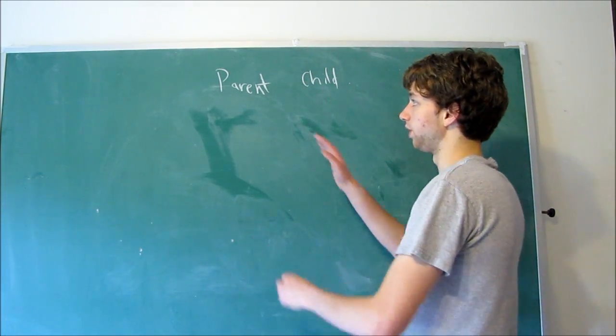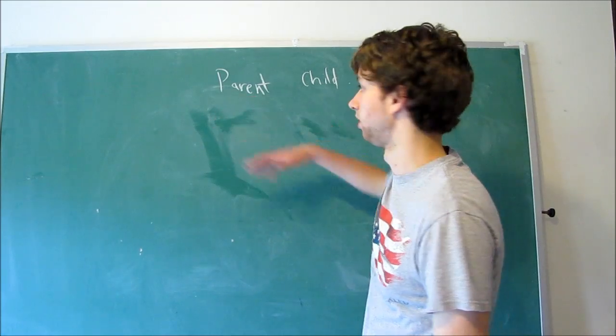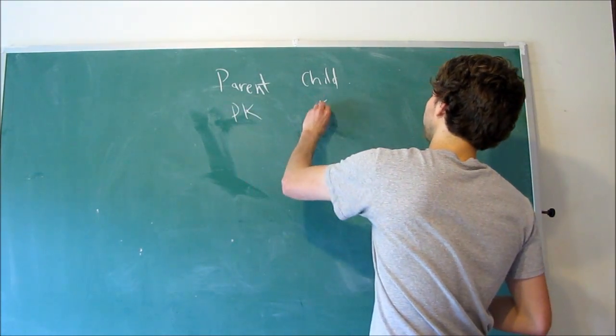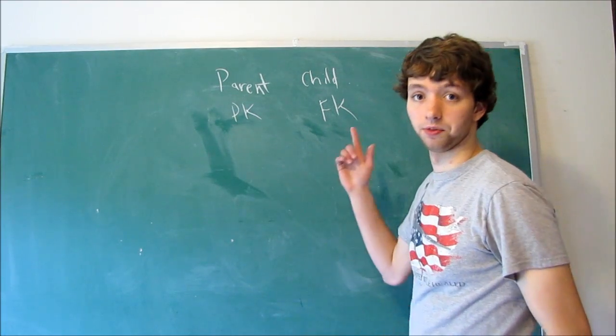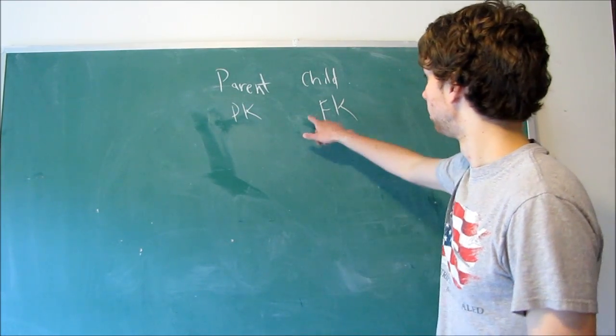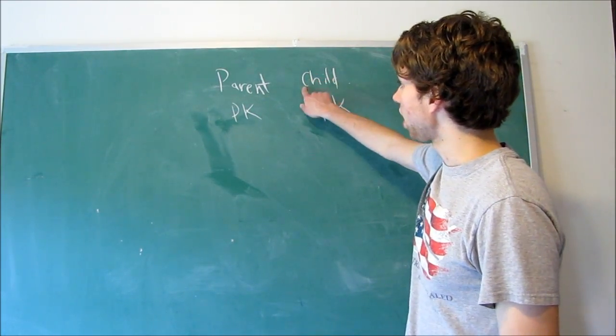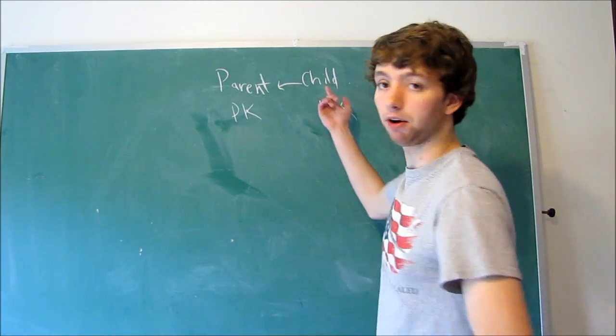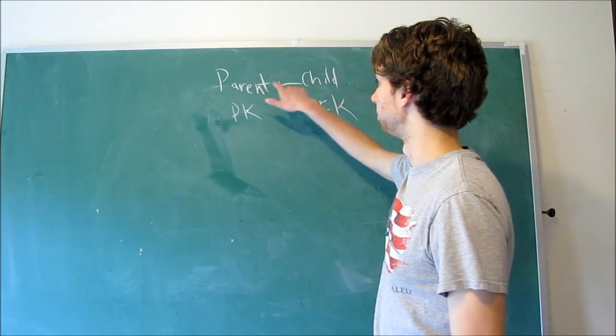The primary key is the parent. The foreign key is the child. The child points back to the parent. It inherits the values from the parent.